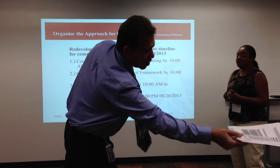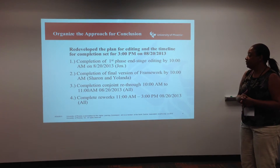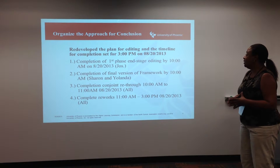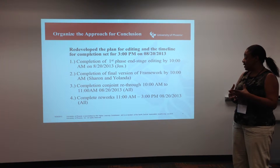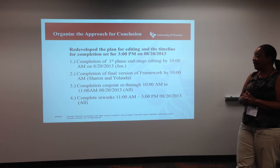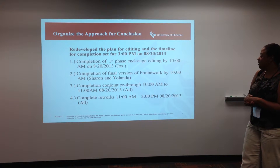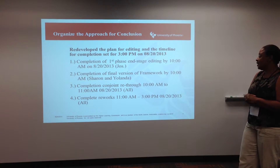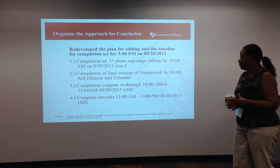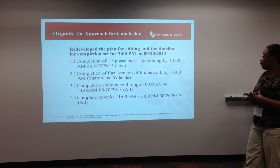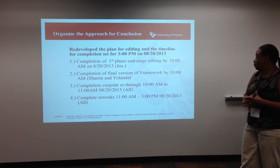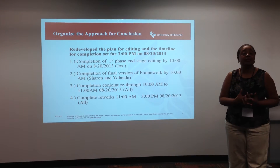The last part talks about organizing the approach for the conclusions. This is a very tight timeline, and it starts with us today. The completion of phase one and the end stage will be done by 8 o'clock a.m. on August the 20th. The completion of the final version of the framework by 10 o'clock a.m., with designated individuals for each team. The third part is the completion of the conjoint run-through from 10 a.m. to 11, and then we're going to do all the rework between 11 and 3, and that's going to be by the entire team.